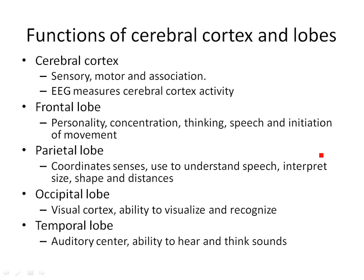Let's talk generally about what goes on in the different lobes. In that cortex you have your sensory, motor, and association areas — this is what an EEG measures. When they do an EEG to find out if you're brain dead, they're putting an electrode there to measure activity in that part of the brain. The frontal lobe is your personality — concentration, coordinating thinking, speech, things like that. Your parietal lobe handles speech understanding; you can also use it to interpret size, shape, and distances, and it coordinates our senses.